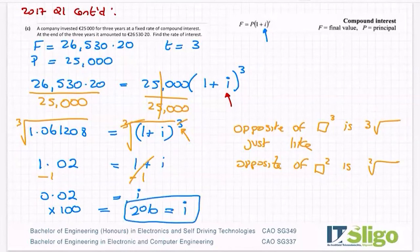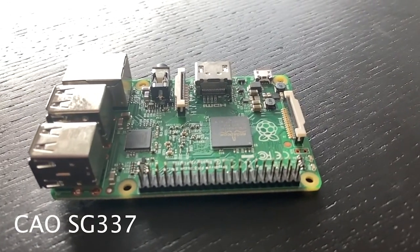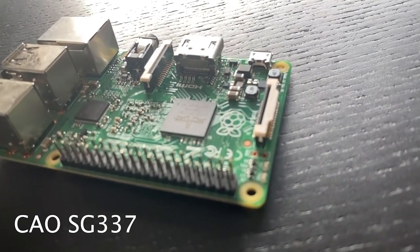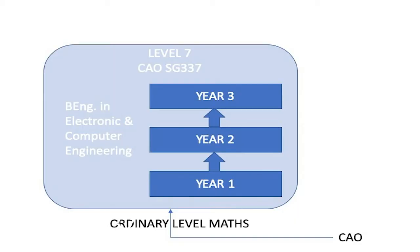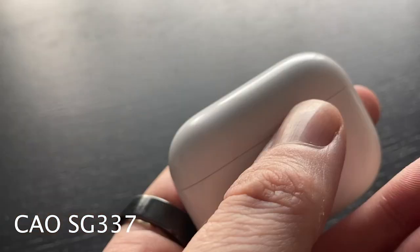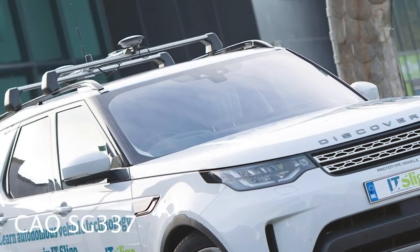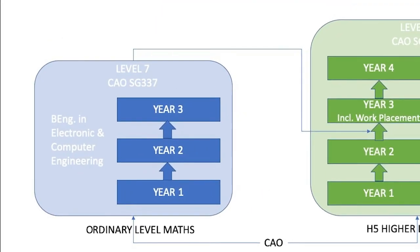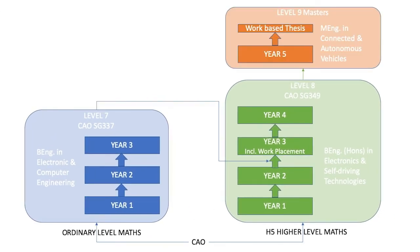If you are interested in technology or engineering but are not doing higher level maths, why not consider our Level 7 in Electronic and Computer Engineering. This is a three-year program that looks at the design and development of embedded electronic systems. These are the medical devices that keeps us healthy, the consumer devices that keeps us entertained, or the controlled systems that keeps us safe on the road. You can then progress onto the Level 8 in Electronics and Self-Driving Technologies and from there to the Masters. Check out the link below for more information.